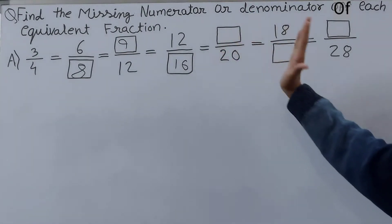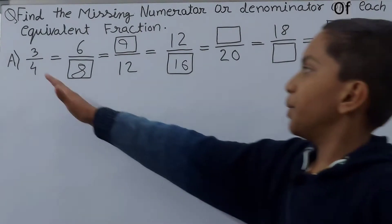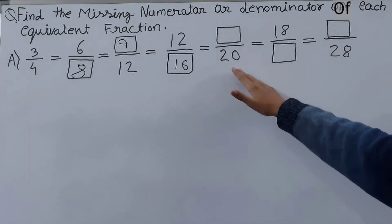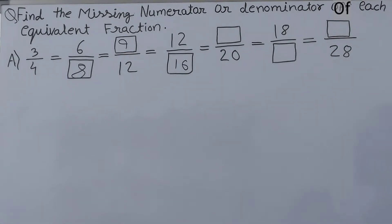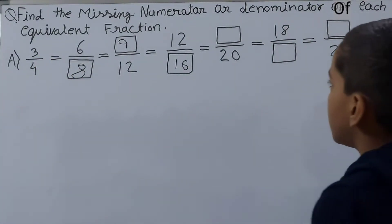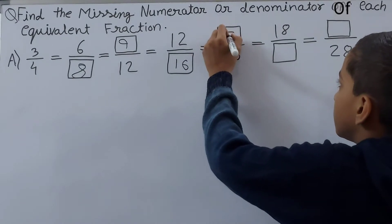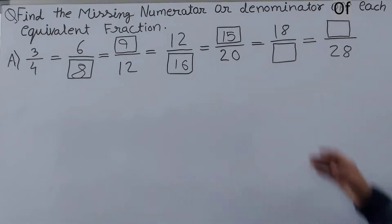Next is □/20 — we have the denominator but not the numerator. Our denominator is 4 and the new denominator is 20: 4 times 5 is 20. So we multiply our numerator 3 by 5 as well: 3 times 5 is 15. So 15 goes in the box.